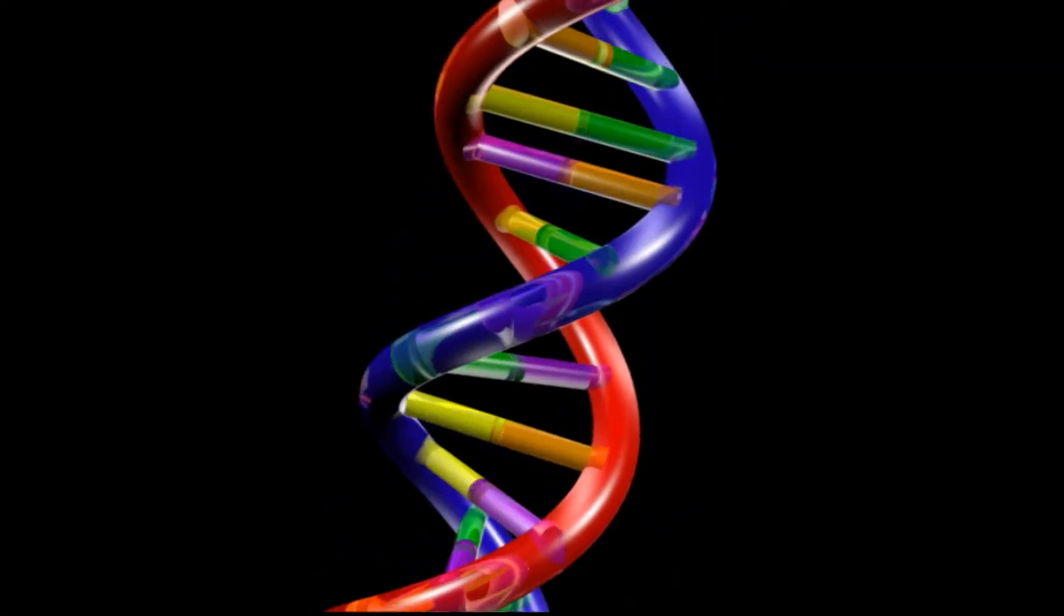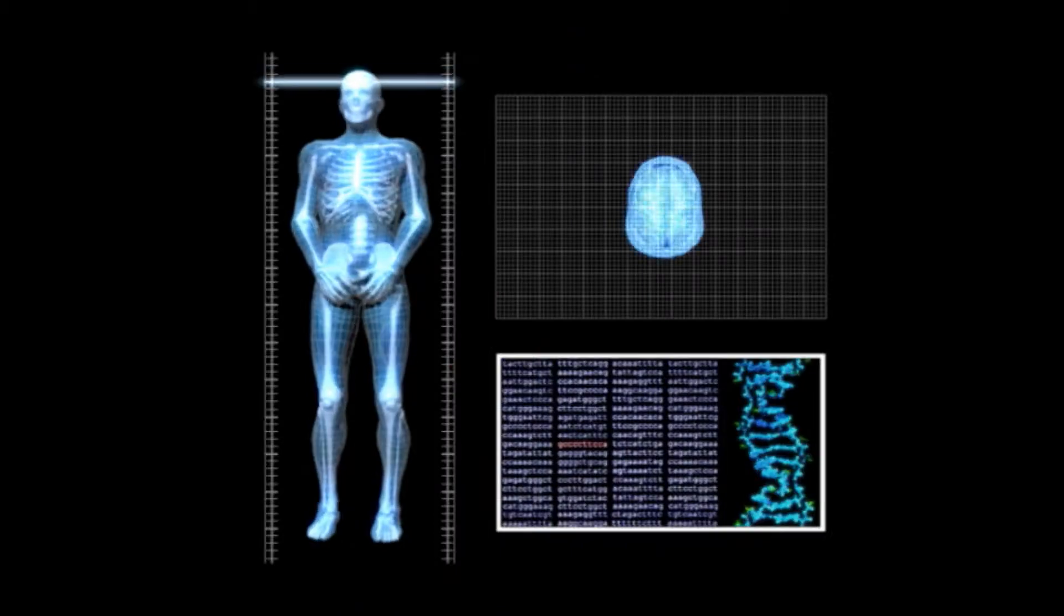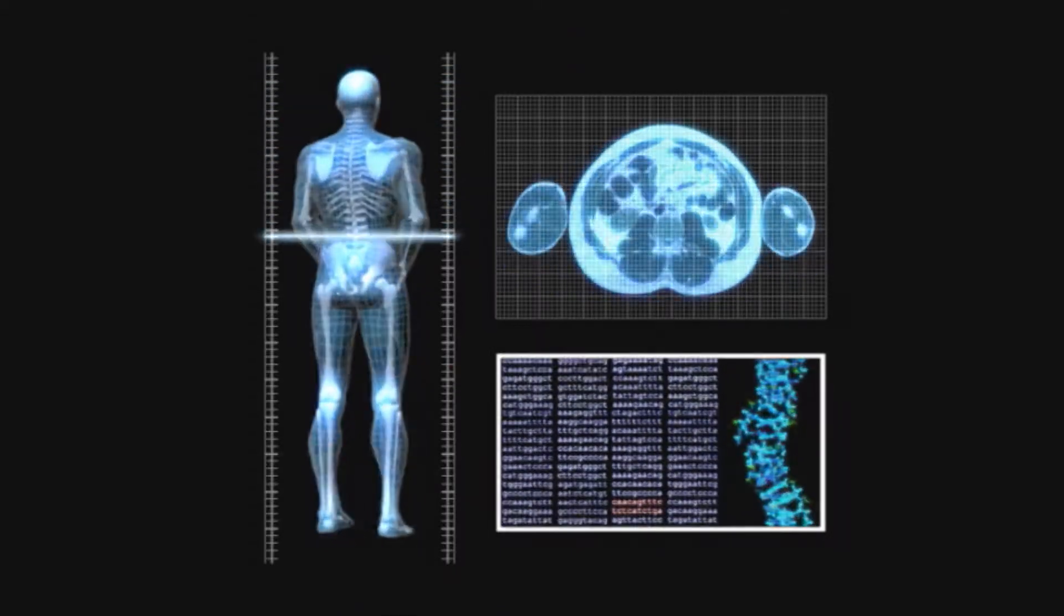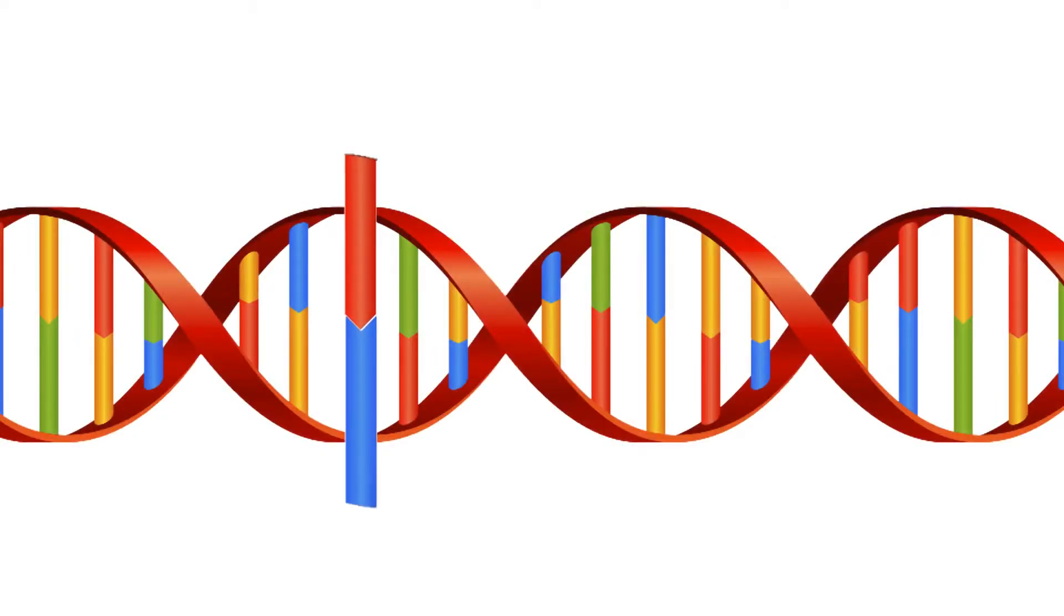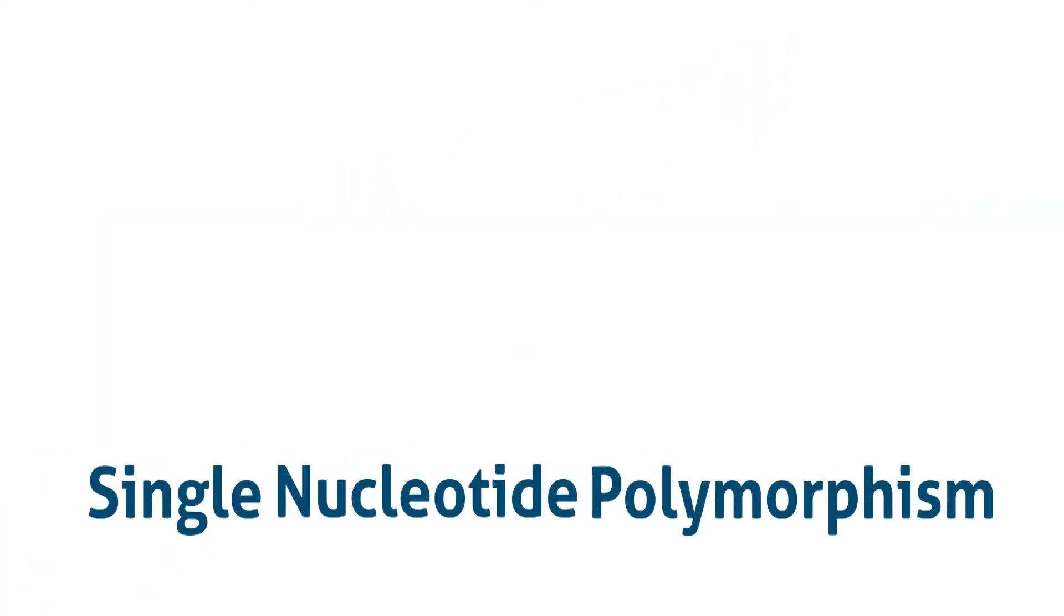And your DNA is what makes you unique. It's like a blueprint for your body. Gene variations in your DNA are what determine each of these characteristics. Scientists call these variations SNPs.